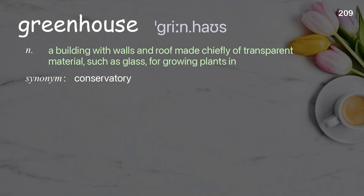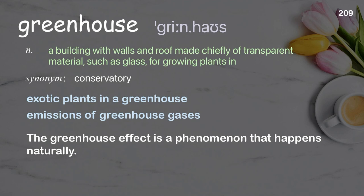Greenhouse: a building with walls and roof made chiefly of transparent material, such as glass, for growing plants in. Examples: exotic plants in a greenhouse; emissions of greenhouse gases; the greenhouse effect is a phenomenon that happens naturally.